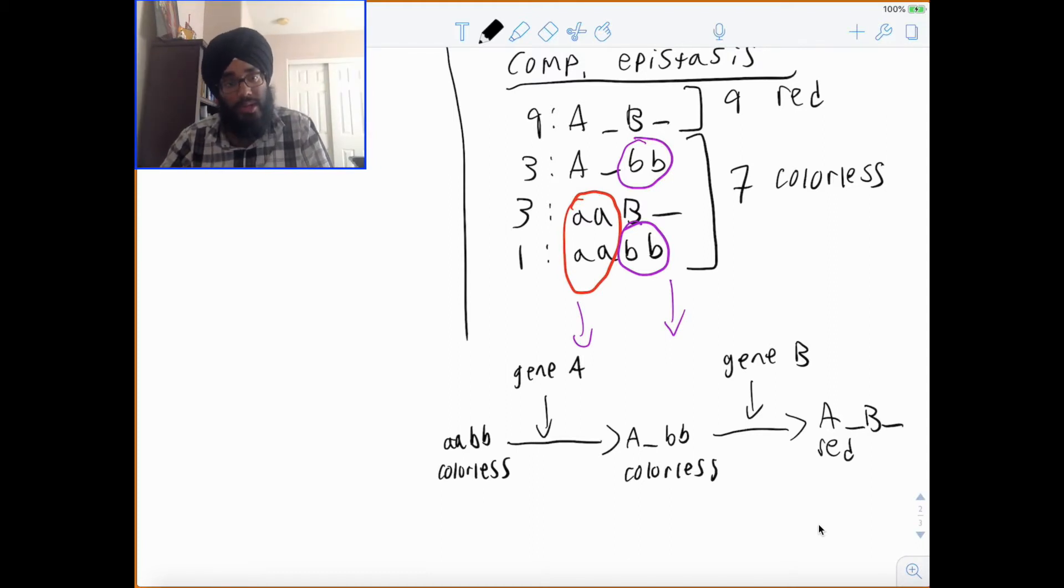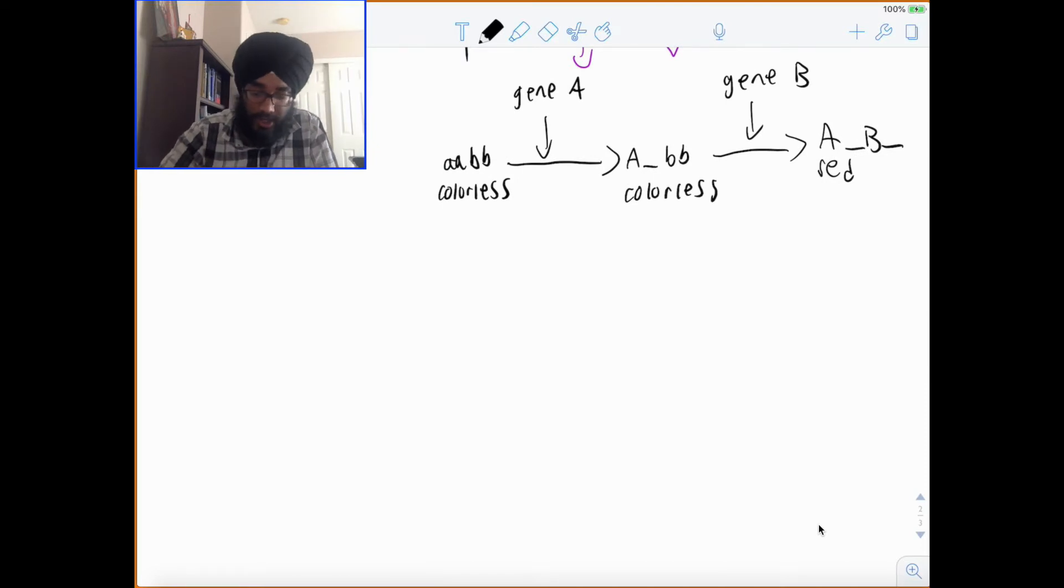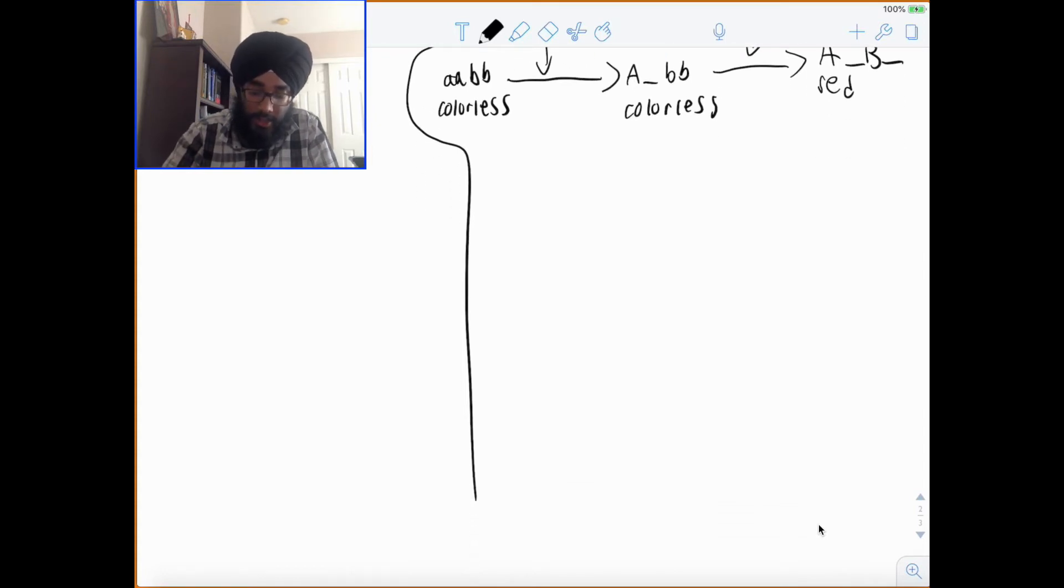So, you guys can see how even my pathway is indicating I'm going from colorless to colorless to red. Because it needs both dominant gene A and dominant gene B. I'm going to give you guys, now, a modification ratio. And there's a lot of modification ratios out there that your professor can give you. But just remember, when you're doing modification, it's the same thing. You're just looking for patterns.